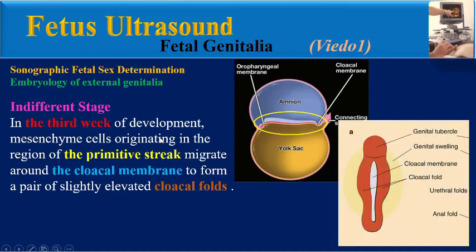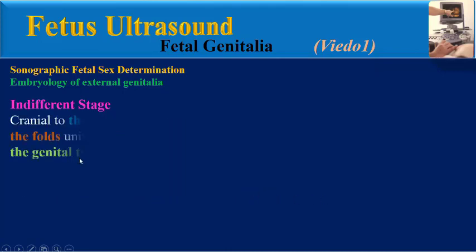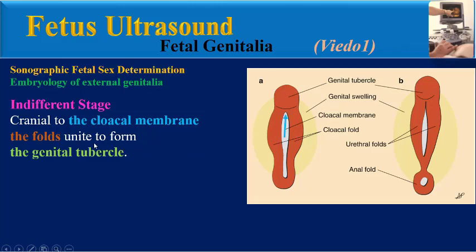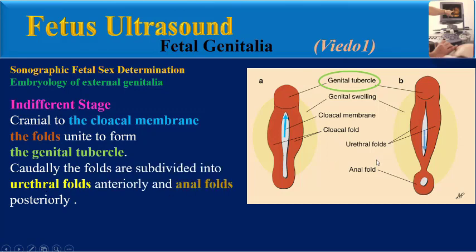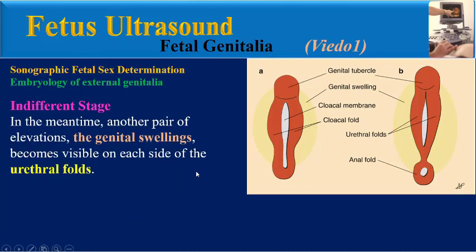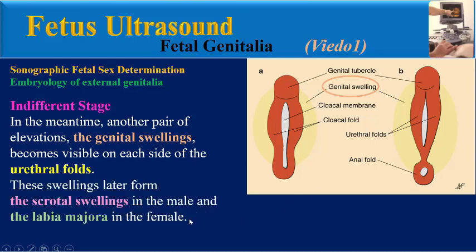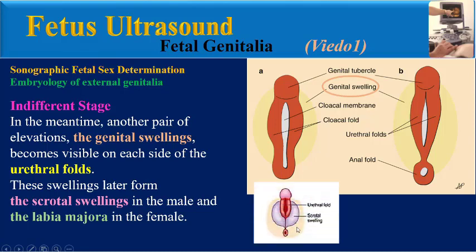In the third week of development, mesenchymal cells originating in the primitive streak region migrate around the cloacal membrane to form a pair of slightly elevated cloacal folds. Cranial to the cloacal membrane, the folds unite to form the genital tubercle. Caudally, the folds are subdivided into urethral folds anteriorly and anal folds posteriorly. Another pair of elevations, known as genital swellings, become visible on each side of the urethral folds. These swellings later form the scrotal swellings in the male and labia majora in the female.